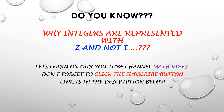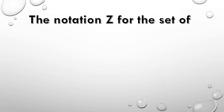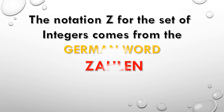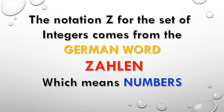So let's know why integers are represented with Z and not with I. The notation Z for the set of integers comes from the German word Zellen, which means numbers.